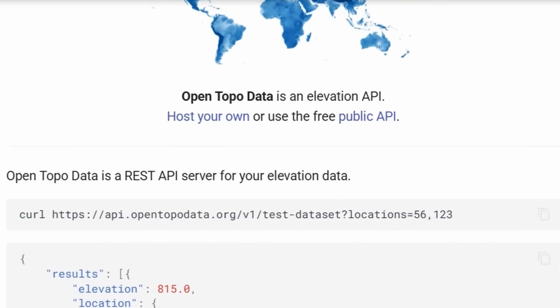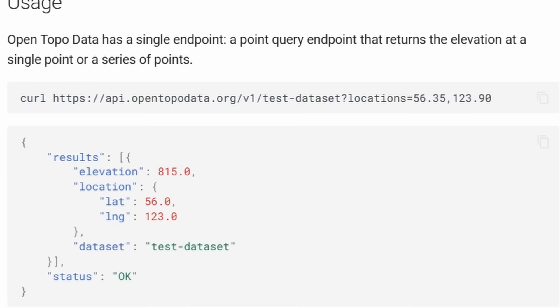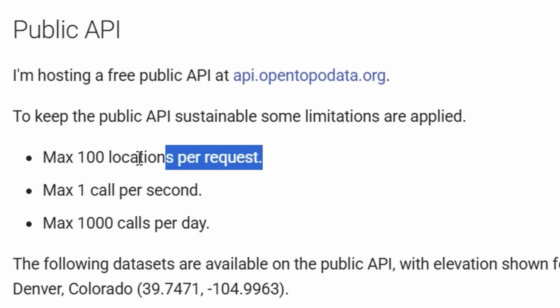In this case from opentopodata.org. They offer a free public API which has some limitations like 100 locations per request and a maximum of one call per second.